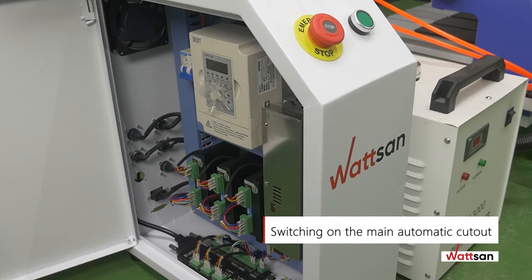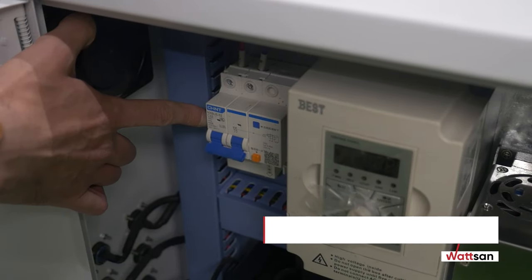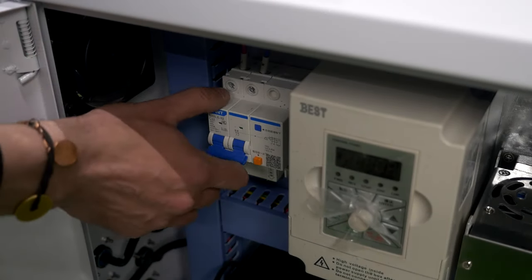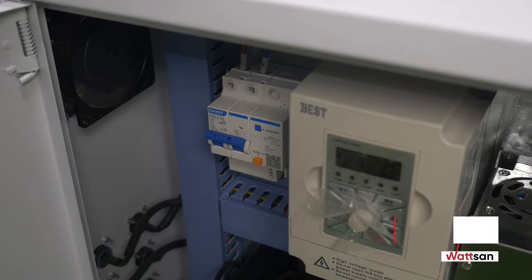Switching on the main controller. Open the lid of the control unit and switch on the main automatic cutout of the machine.